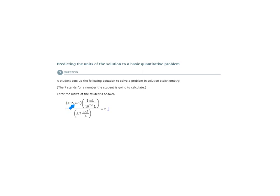So we have 1.15 moles times this conversion factor, 1 milliliter, 10 to the minus 3 liters, all divided by 8.7 moles per liter. So we need to determine which units are going to cancel in these calculations and what the units of the answer will be.